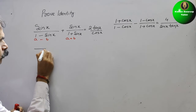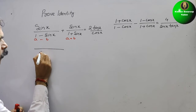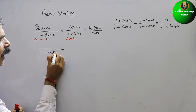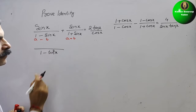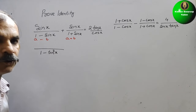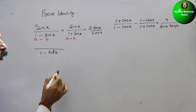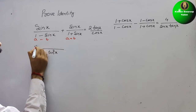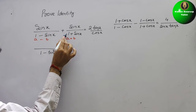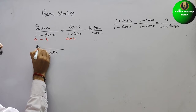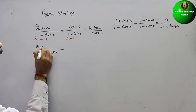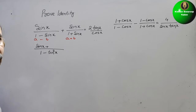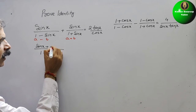So the LCM will be 1 - sin²x, which is a² - b². Now we cross multiply. The numerator becomes: sin x × 1 = sin x, plus sin x × sin x = sin²x.